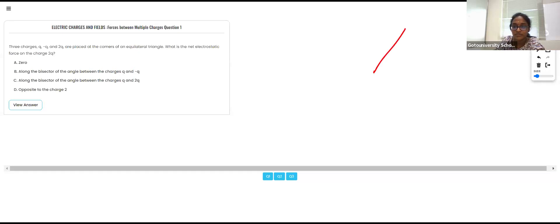So when we have three charges, it is Q, -Q, and then 2Q. So they are asking, placed at the corners of the equilateral triangle, which means that everything is same right. All the sides are equal. So what is the net electrostatic force on charge 2Q?